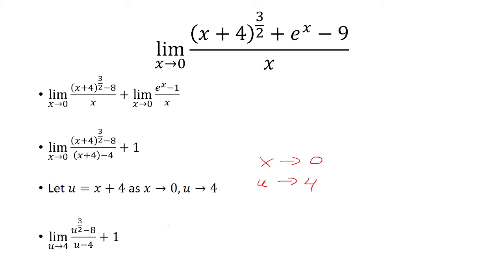And then x plus 4 becomes u. So I want, in this case, u to the n minus a to the n over u minus a. So I have to rewrite 8 as a to the n. Well, n here has to be 3 halves. Basically, you have 8 equals a to the 3 halves. And you want to solve for a.